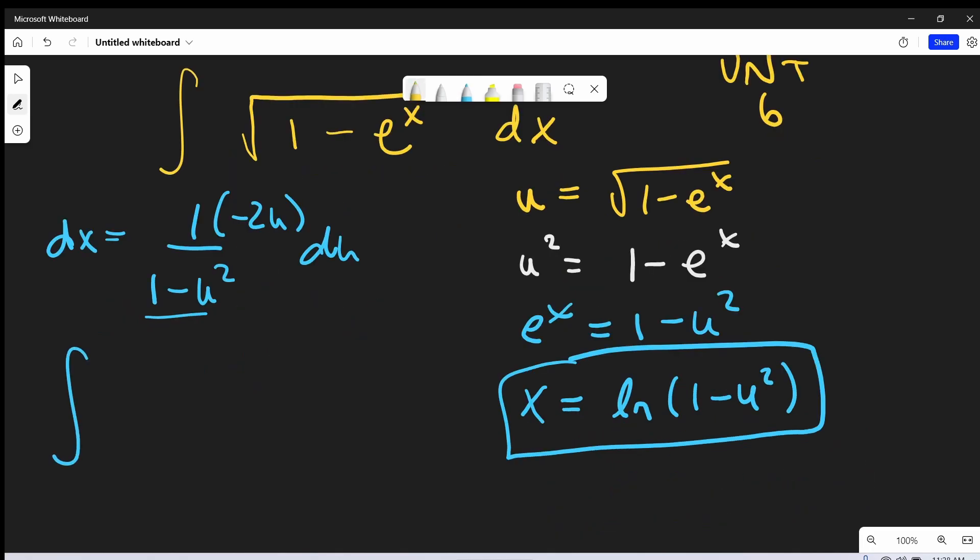So now I'll make this substitution here. Our square root term, that's just going to be u, but we're going to have this dx, so we're going to have minus 2u over 1 minus u squared du.